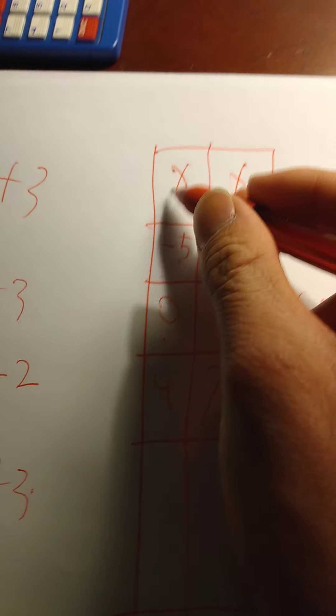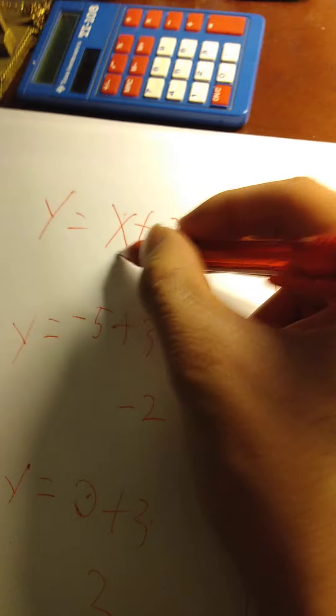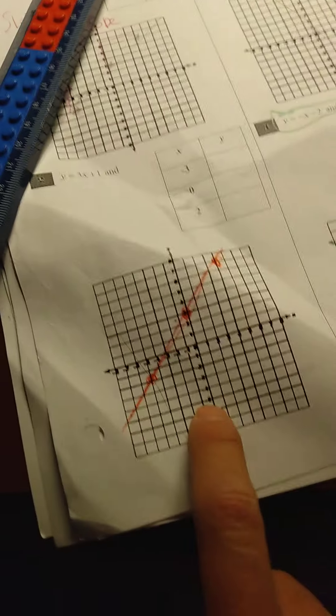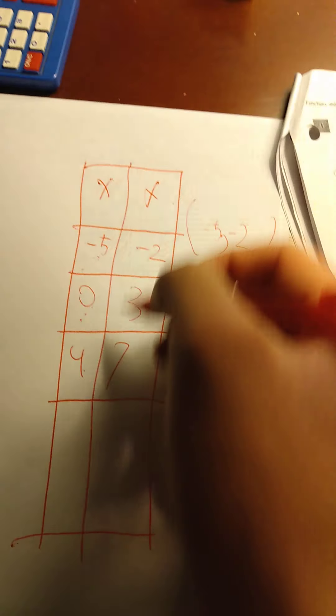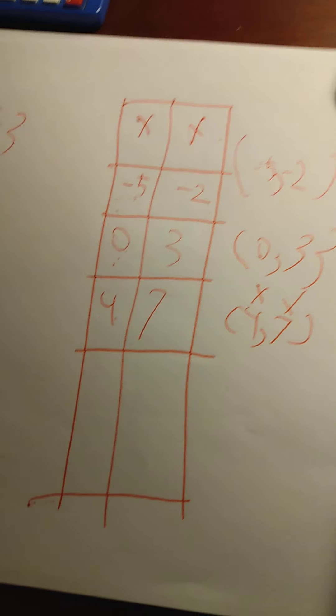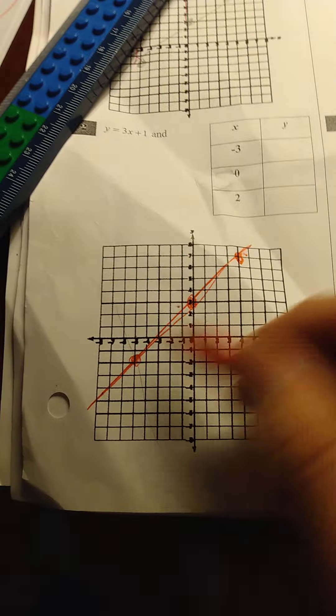So, we knew what x had to be because the problem chose it for us. We did the problem. We got y. We put it on a plot, on a graph.